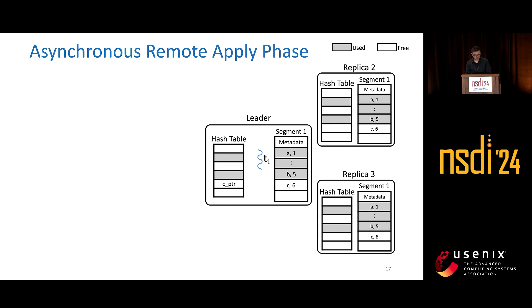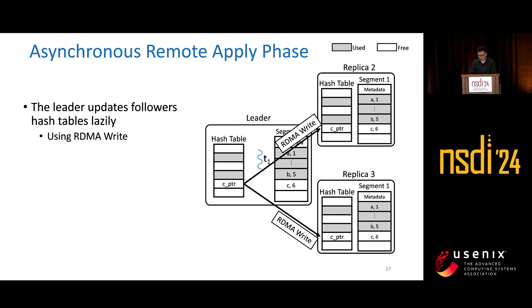The leader also lazily applies updates to the follower's hash tables with another RDMA write. So this is the last remaining phase.